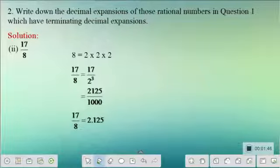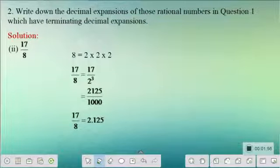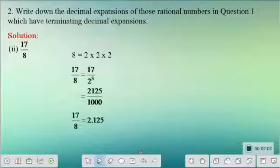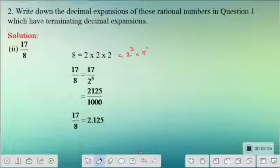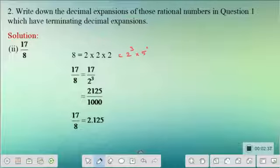Let us look at the numerator and denominator. To check whether a rational number is terminating or non-terminating, we need not bother about the numerator — we bother about the denominator. The denominator here is 8, and the prime factorization of 8 is 2 × 2 × 2, that is 2 power 3. Since we don't have any factor of 5, I can write it as 2 power 3 into 5 power 0, which is of the form 2 power m into 5 power n. Hence it is a terminating decimal expansion.